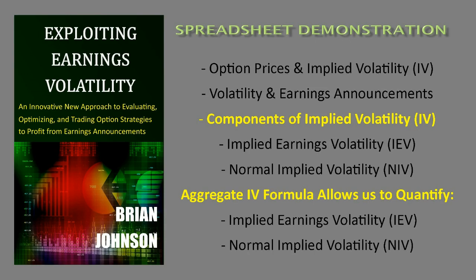The first video used the aggregate implied volatility formula, which is introduced in the book, to calculate the implied earnings volatility — or the market's expected level of volatility on the earnings date — immediately prior to past earnings events. That's critical information to help us understand how the market prices the level of volatility associated with the earnings event for a specific underlying security. But in addition to that, we also need to know what the current level of implied earnings volatility is that is priced into the entire option matrix.